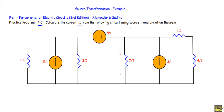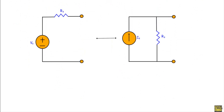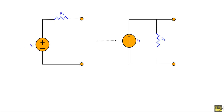Source transformation theorem states that if I have a voltage source Vs in series with resistance Rs, we can convert that to a current source Is in parallel with resistance Rs. Or if I have a current source Is in parallel with resistance Rs, we can convert that to a voltage source Vs in series with resistance Rs. If I want to convert a voltage source to a current source, the value of current source Is will be equal to Vs over Rs.